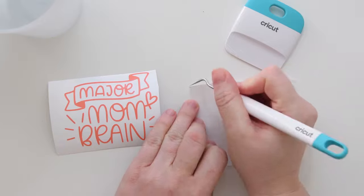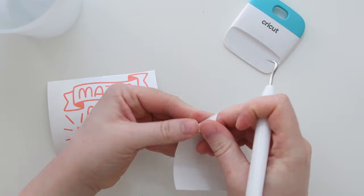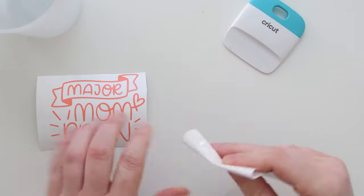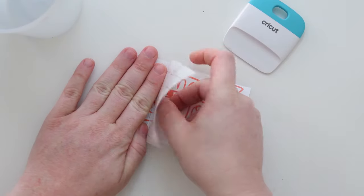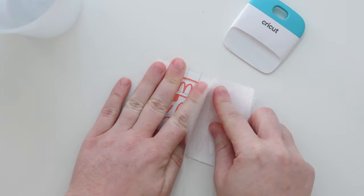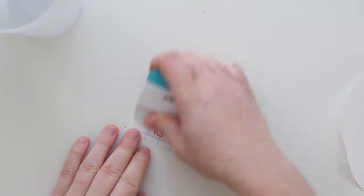Alright so I've already cut my design and already weeded the design. Let me share with you a tip for getting the transfer tape off the backing because that can be tricky. I like to peel the backing off of the transfer tape just a little bit and then I'll line the transfer tape up along the longest side of the design and just slowly peel the backing of the transfer tape away. This prevents any bubbles or creases.